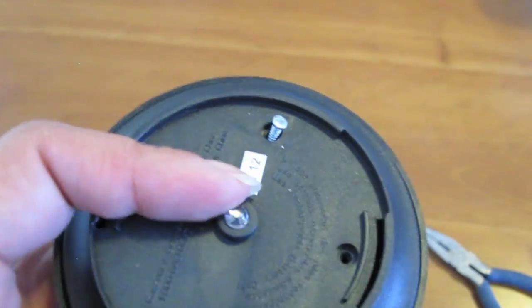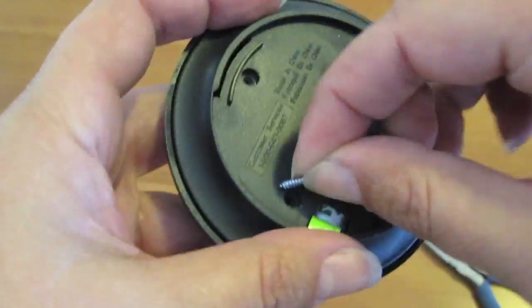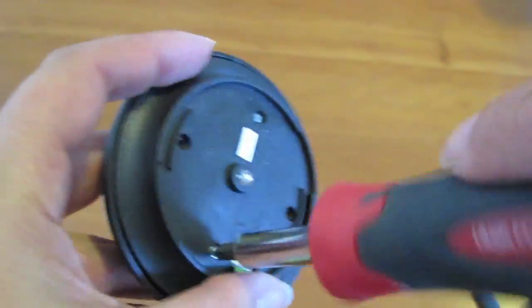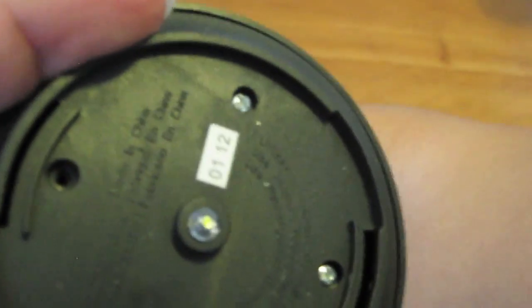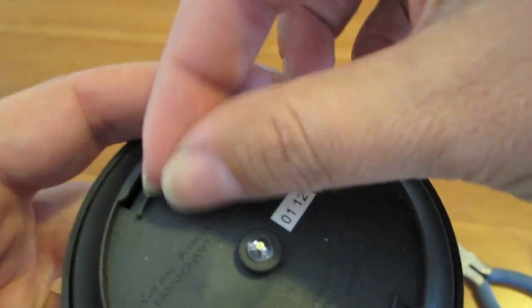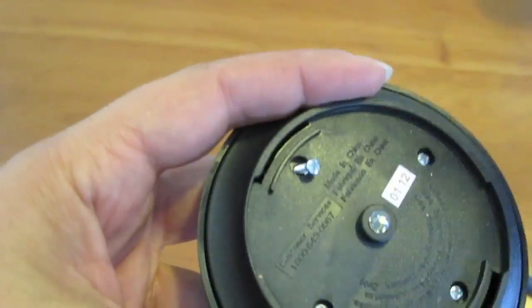Now you put the screws back in. Ironically, the thing that takes the longest on this is unscrewing and re-screwing the light back together.